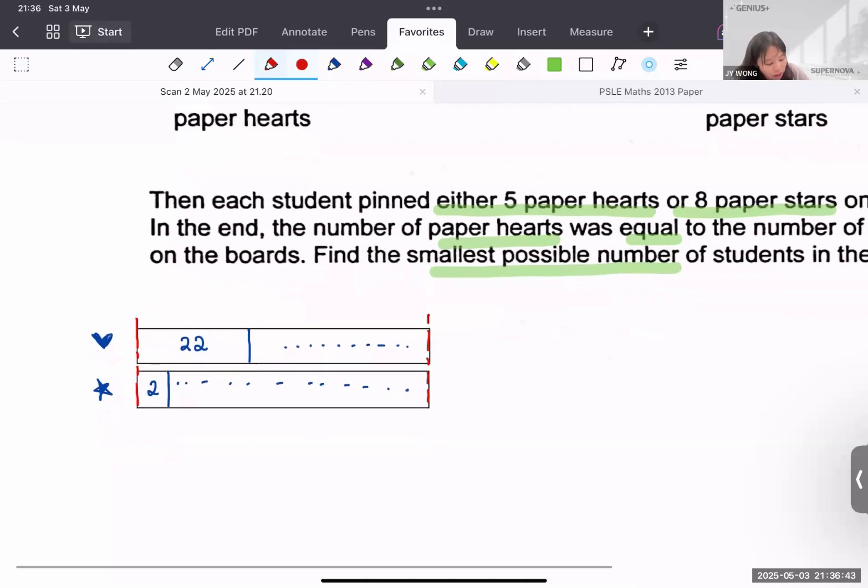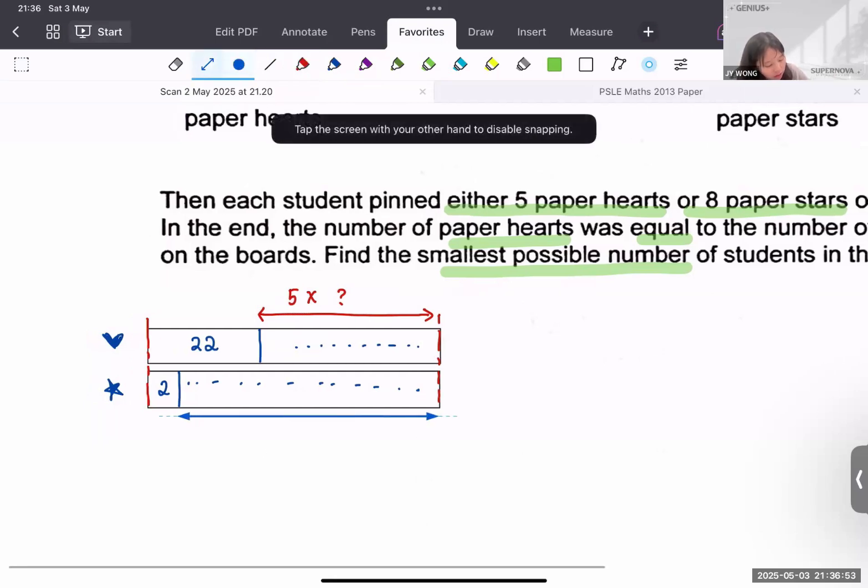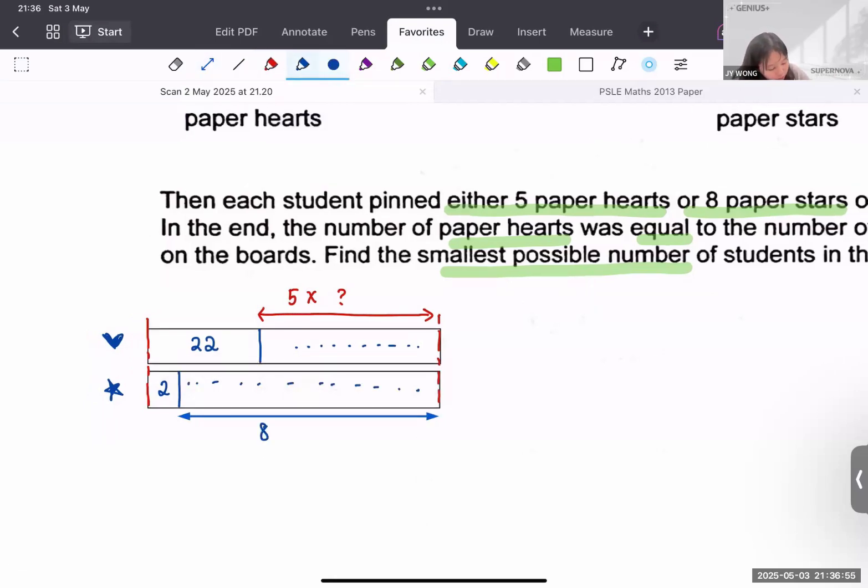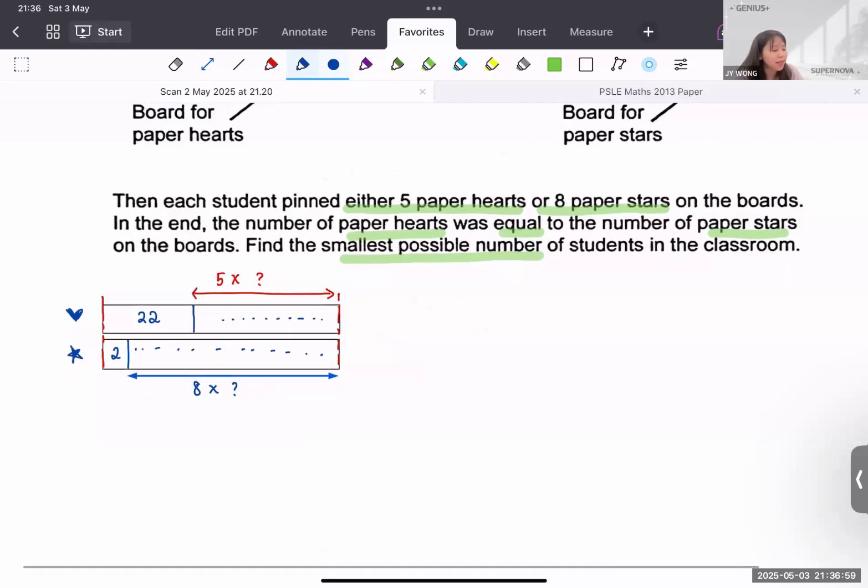So for the heart, we know that each student will be 5 times something. And then for the star, we know that it's going to be 8 times something. But in the end, you must get the same total at the end. So what can we do? So it's a bit of a guess and check here.